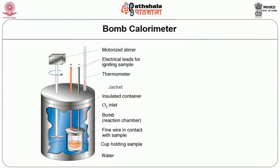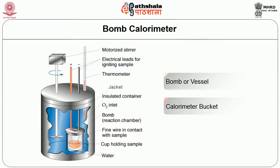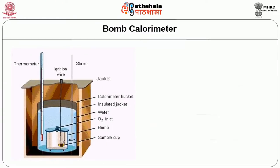The oxygen bomb calorimeter consists of three essential parts: number one, the bomb or vessel in which the combustible material is burned; the calorimeter bucket or water container holding a measured quantity of water in which the bomb is immersed; and the jacket for protecting the calorimeter bucket from the effect of variation in room temperature.